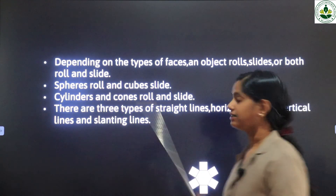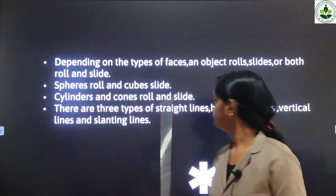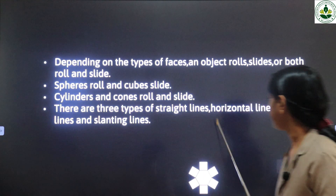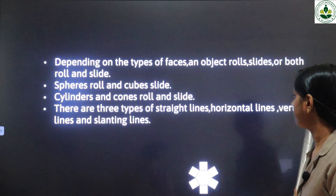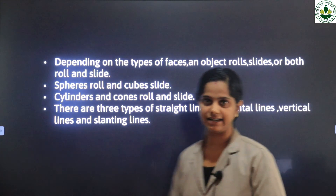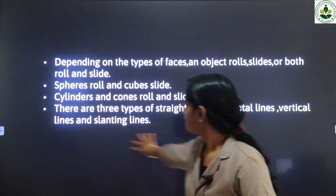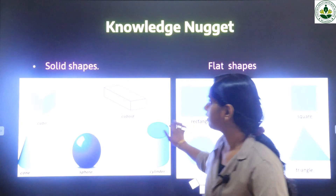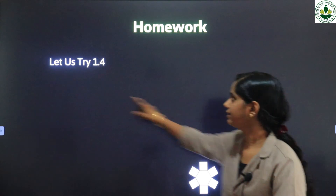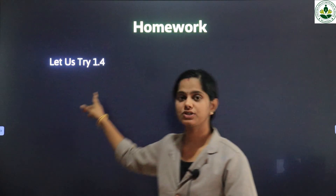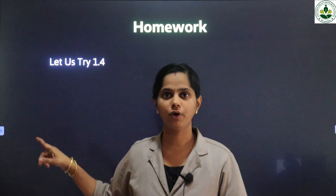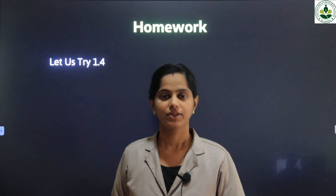There are three types of straight lines: horizontal line, vertical line, and slanting lines. Please do the homework given here — let us try exercise 1.4.